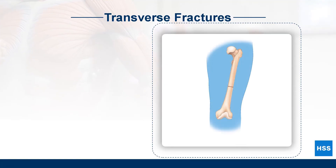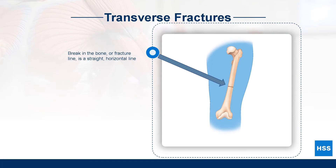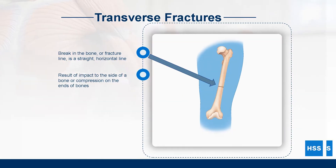A transverse fracture is defined by a straight horizontal break in the bone, also known as the fracture line. A transverse fracture may be caused by an impact to the side of a bone or the compression of the ends of the bone.